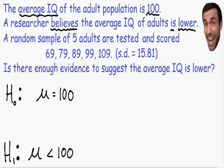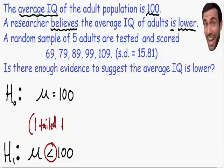Any time that the alternative hypothesis is written with a less than or greater than symbol, this means we're going to perform a one-tailed test. I'll explain what this means in the next step, but any time you use a greater than or less than symbol in your alternative hypothesis, this means we're going to perform a one-tailed test. Now we are ready to move on to step two.